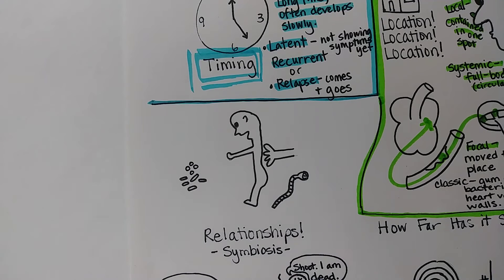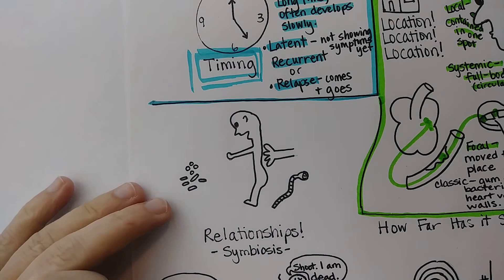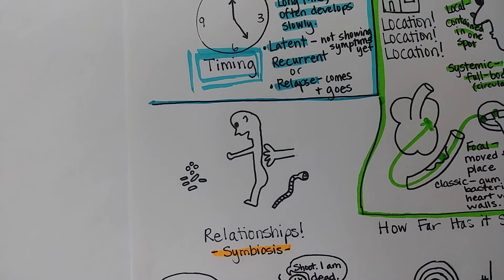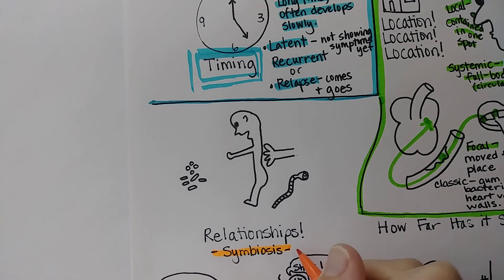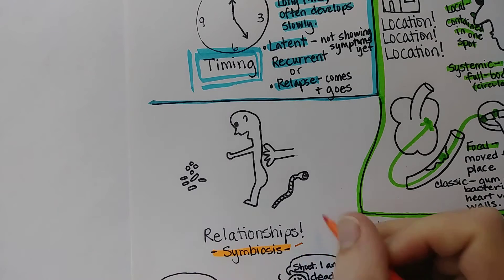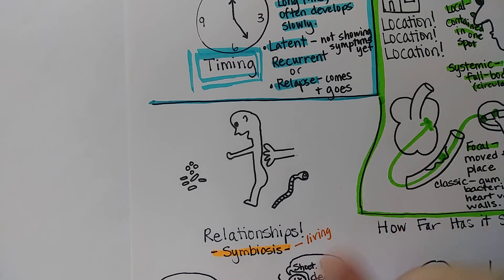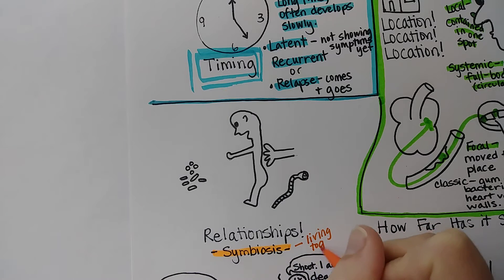Now let's look at terms that have to do with symbiotic relationships. A lot of times people assume symbiosis means something good, and it can be, but it also can be bad. The term simply means two organisms living together — 'bio' means life and 'sym' means together. So it can be good or bad.